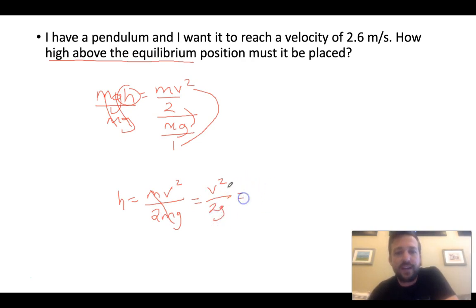And I can just plug in my stuff. It needs a velocity of 2.6. 2.6 squared over 2 times G, which is 9.8. And I get an answer of 2.6 squared divided by 2 times 9.8. It comes out to 0.345 meters. Now, that's how high above the equilibrium position it needs to be to reach that velocity.